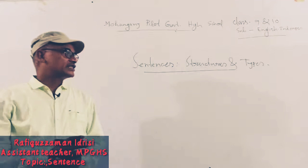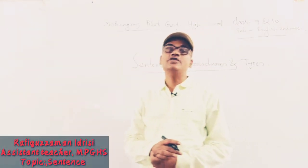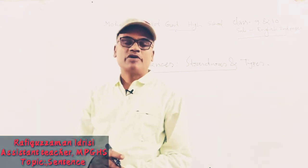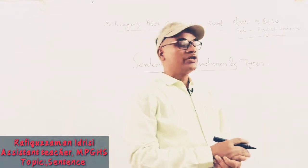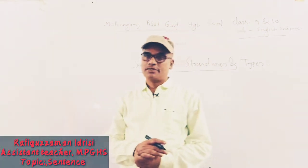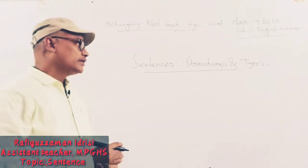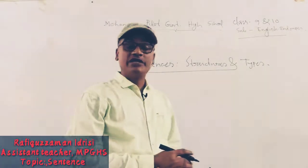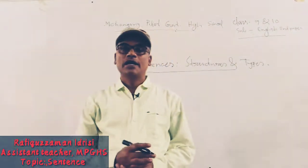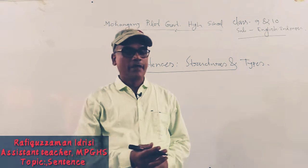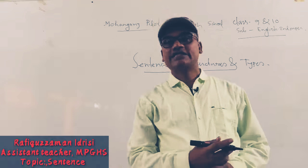In the previous lessons and classes, you have learned about sentences. They are classified according to meaning or purpose. According to meaning, there are five kinds of sentences. They are assertive, interrogative, imperative, optative, and exclamatory.